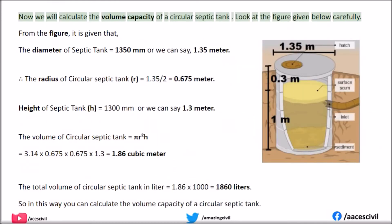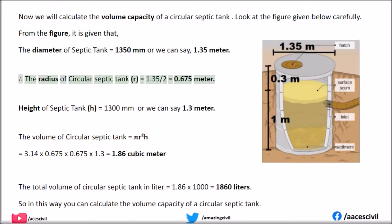Now we will calculate the volume capacity of a circular septic tank. Look at the figure given below carefully. From the figure, the diameter of the septic tank equals 1350 mm, or 1.35 meters. The radius R equals 1.35 divided by 2, which equals 0.675 meters.